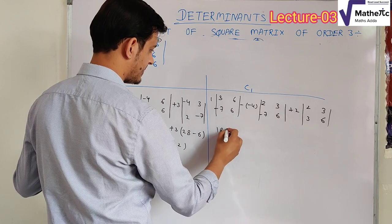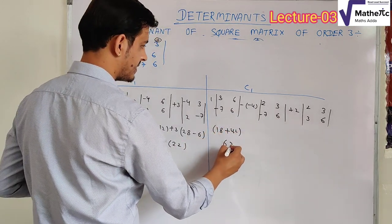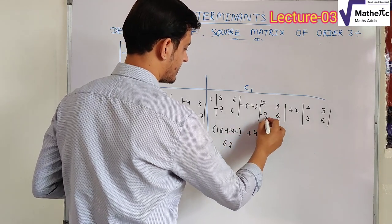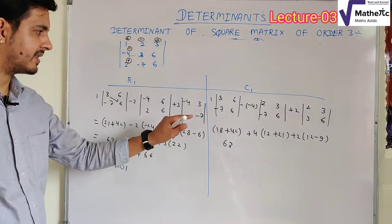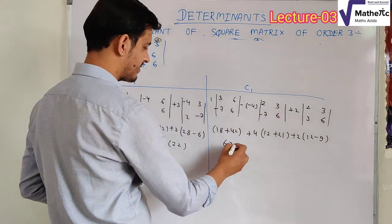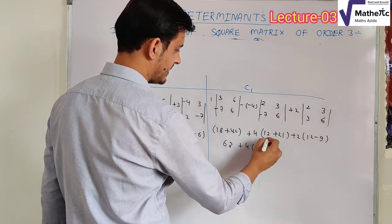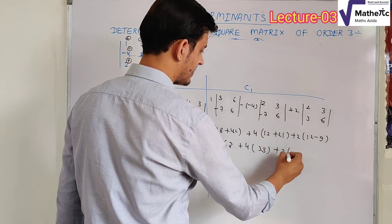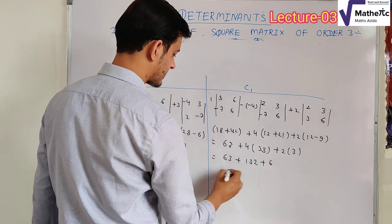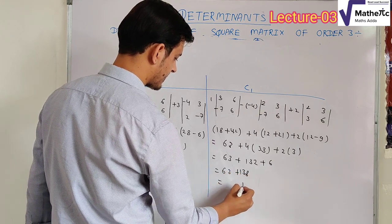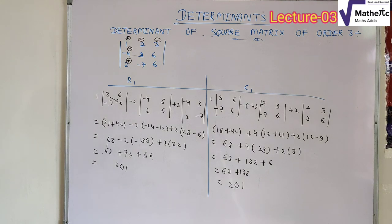Solving the C1 expansion: 1×(18+42) − (−4)×(12+21) + 2×(12−9) = 1×63 + 4×33 + 2×3 = 63 + 132 + 6 = 201. Both the R1 and C1 expansions give the same answer, 201. You can also try expanding along R2, R3, C2, or C3 — for C3 the signs would be plus, minus, plus — and you will get 201 in every case.